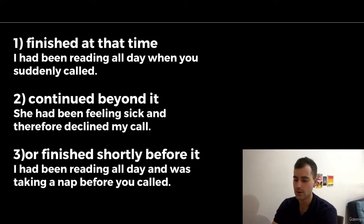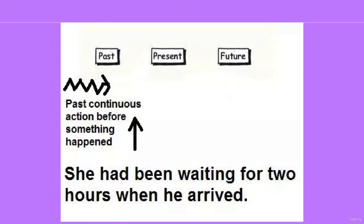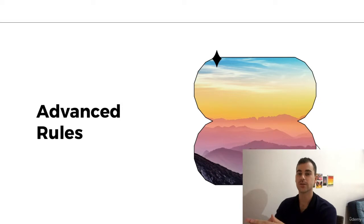Or — finished shortly before that time: I had been reading all day and was taking a nap before you called. She had been waiting for two hours when he arrived. This describes an action before something happened.